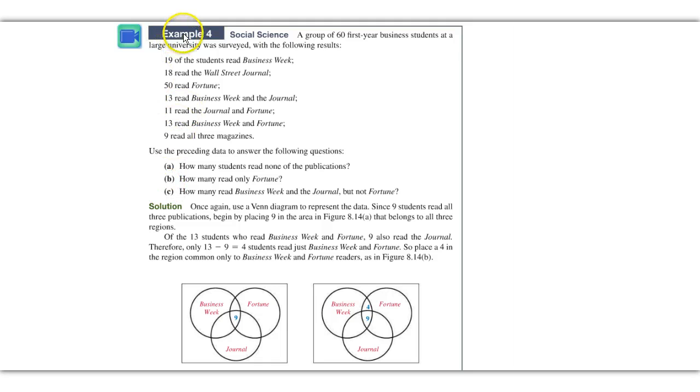In example four, we'll take it step by step. It gets more complicated, but here we have a group of 60 first-year business students at a large university were surveyed with the following results. Now, there were three magazines and journals that they were reading, Business Week, Fortune, and the Wall Street Journal. And then they give you various values. But what you want, as we did in the previous example, what is the one that's read by all? And that is nine read all three magazines. So we put the nine right there.